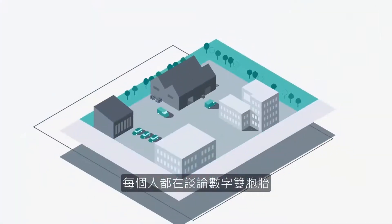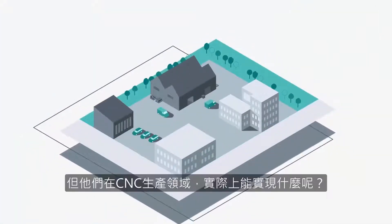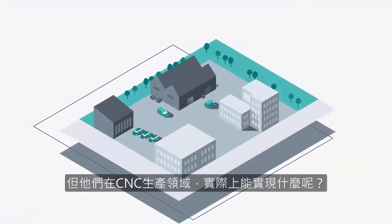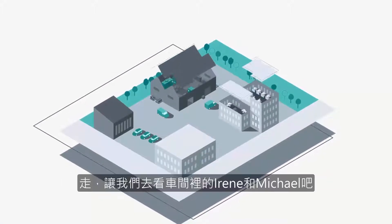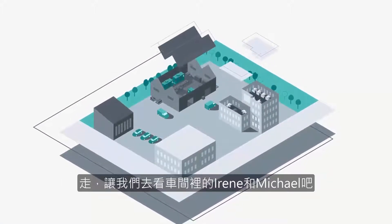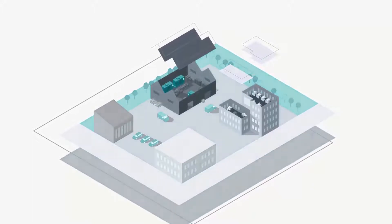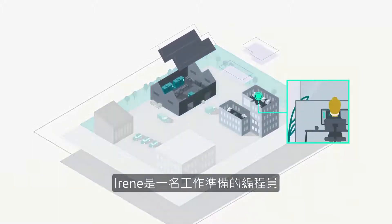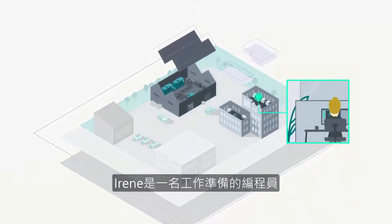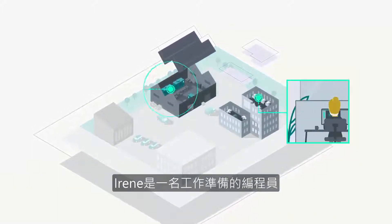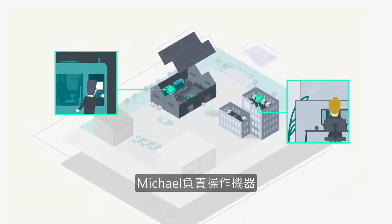Everybody is talking about digital twins, but what can they actually achieve in CNC production areas? Let's go to Irene and Michael on the shop floor. Irene is a programmer in job preparation, and Michael operates the machine.